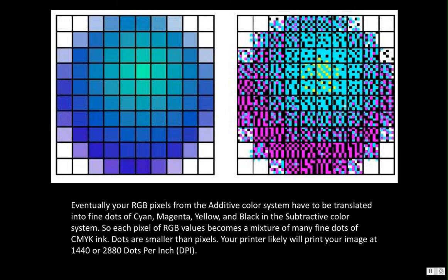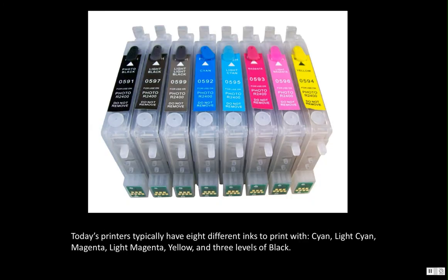These pixels, which have red, green, and blue — RGB — information, have to be translated from the additive color system into the subtractive color system, which uses cyan, magenta, yellow, and black to make up the colors. When we do that, we're mixing together tiny little dots of those four or more colors to make each pixel. It used to just be cyan, magenta, yellow, and black, but now with more advanced photographic printers we have eight different colors — and really maybe nine.